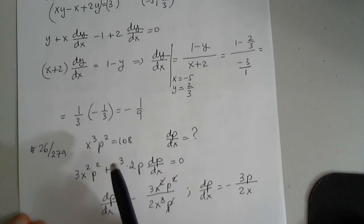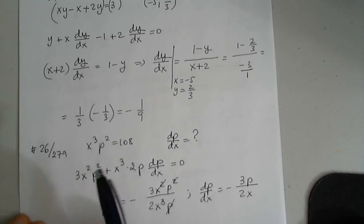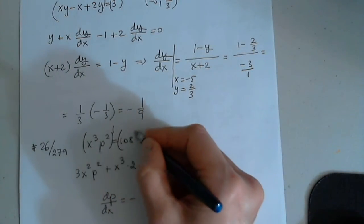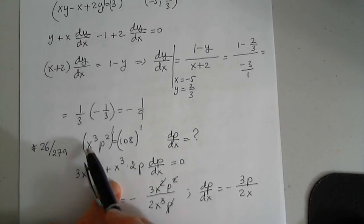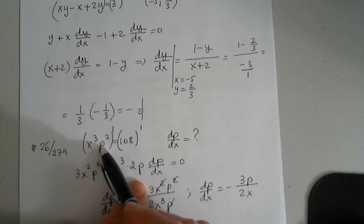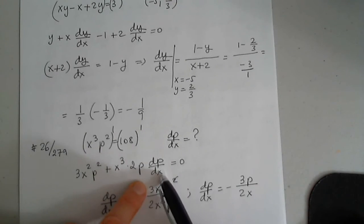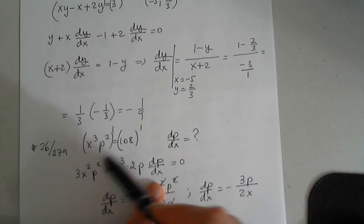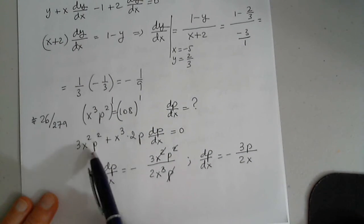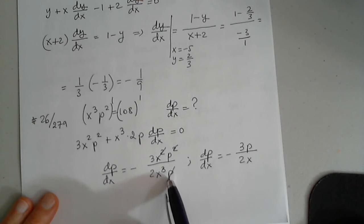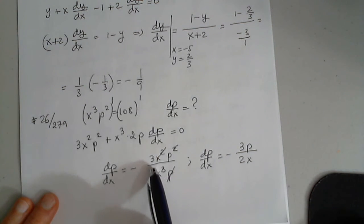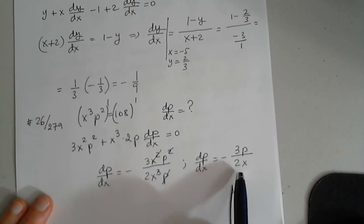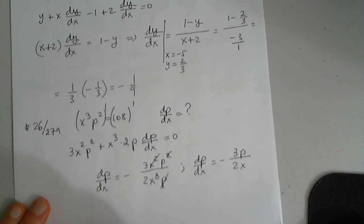Same question here. We were asked to differentiate implicitly, so we differentiate the left-hand side and we differentiate the right-hand side. So 3x squared p squared plus x cubed 2p times the inner function prime, which is dp over dx, and the right-hand side is 0. I move this to the other side and divide it by 2x cubed p. On the other side, 3x squared p squared, that's why there is a minus. I simplify 2x's and I simplify the p. So the top is 3p and then 2x with minus in front.